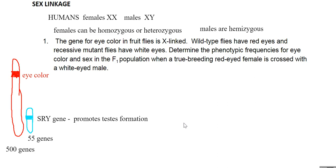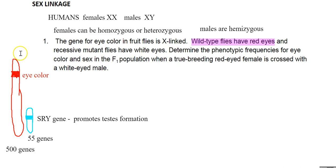The gene for eye color is X-linked. Wild-type flies have red eyes. The phrase 'wild type' is one we will see when talking about linked genes — wild type means showing the dominant trait, which in this case is red eyes.